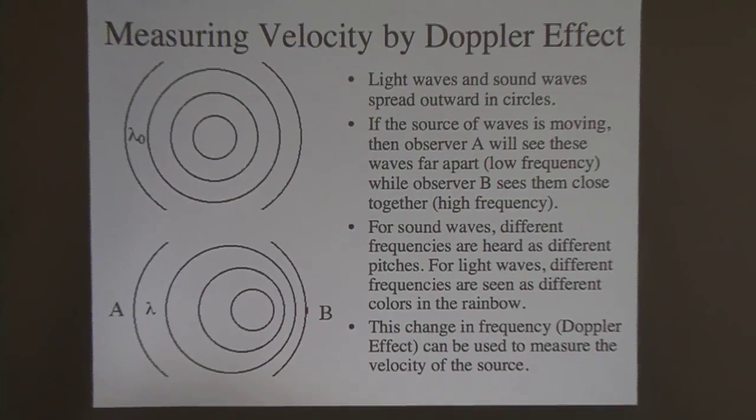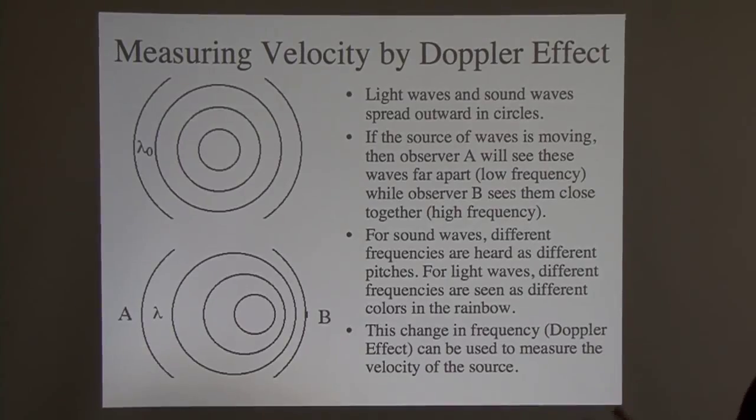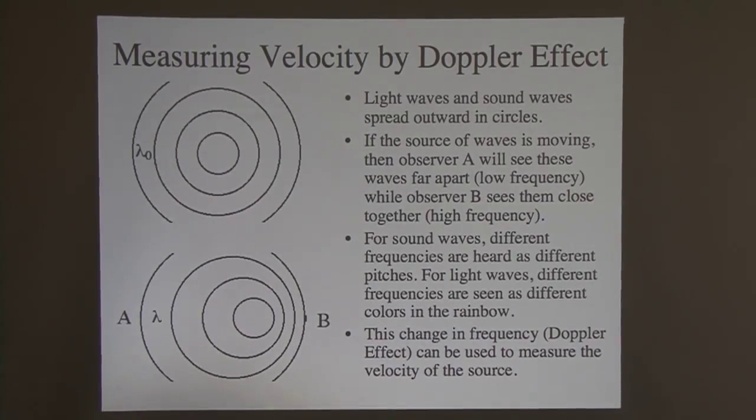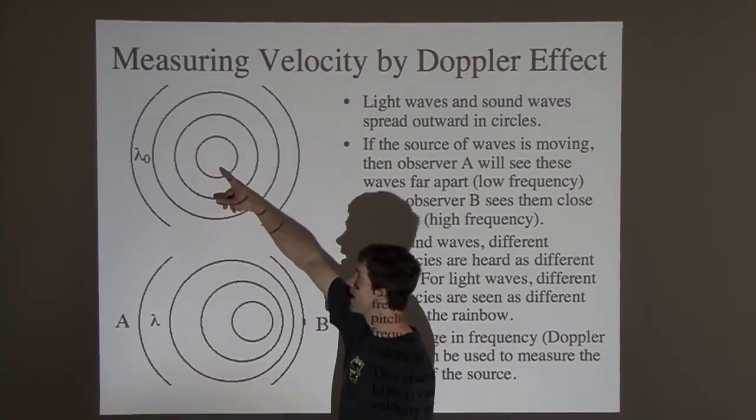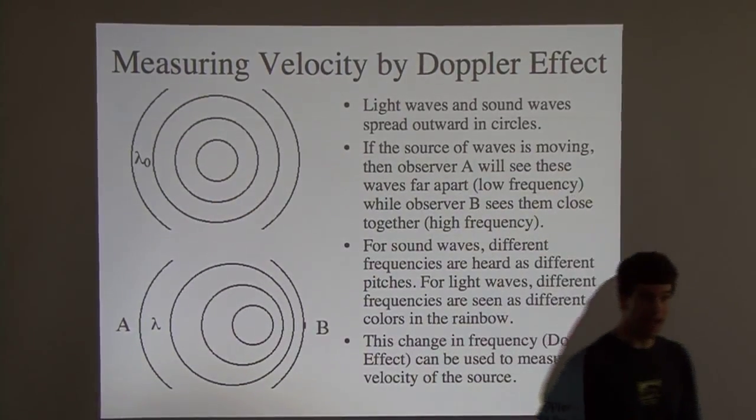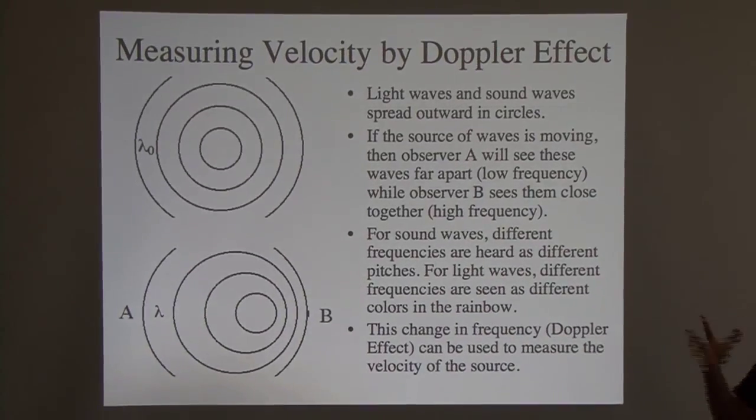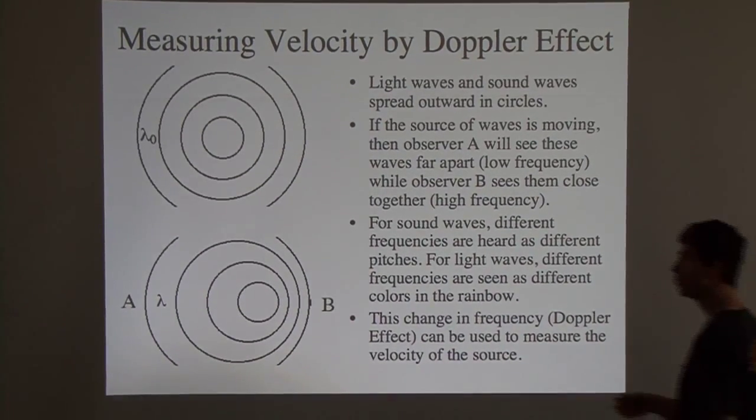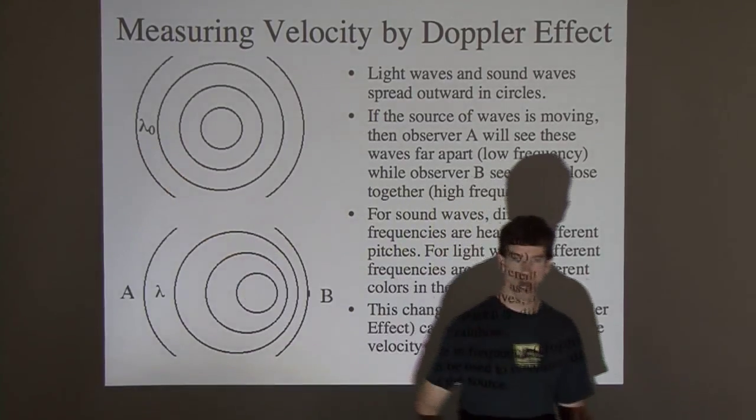Okay. The way Hubble was measuring the velocities of other galaxies moving away is with this Doppler shift. If you have a source of waves, could be sound waves, could be light waves, it doesn't matter. If you have a source of waves and the waves is at rest, all the waves just spread out in concentric circles around it. You've got some wavelength between those. I call it lambda knot.